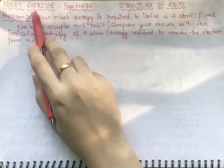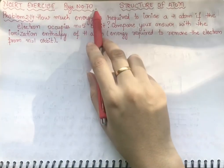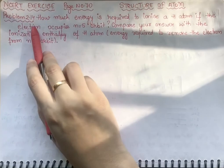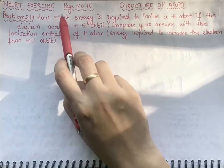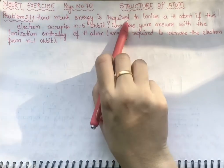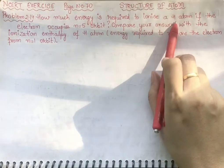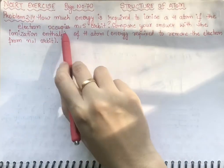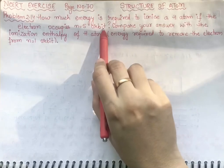Students, this is our NCERT exercise, page number 70, problem number 2.14. The statement asks: how much energy is required to ionize a hydrogen atom if the electron occupies the n equal to 5 orbit?